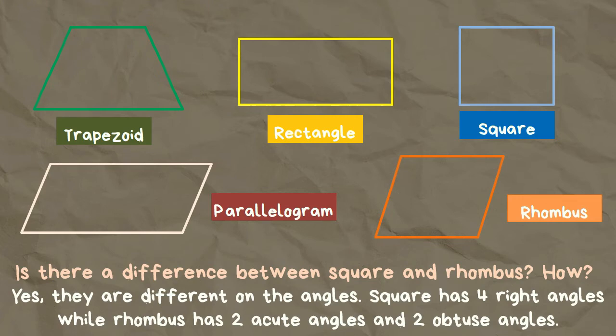Square has four right angles, while rhombus has two acute angles and two obtuse angles.